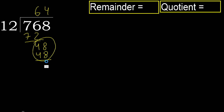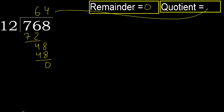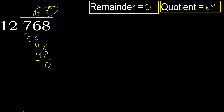Subtract. There is no remainder, therefore finish it. 0, therefore 768 divided by 12 is 64.